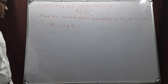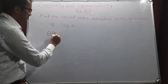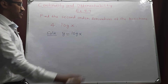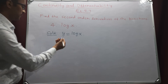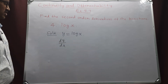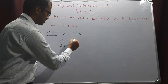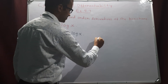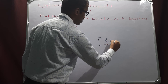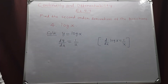Fourth question: log x. Let y equals log x. Differentiating both sides with respect to x, dy by dx equals differentiation of log x, which is 1 by x, because d by dx of log x equals 1 by x. This is the first order derivative.